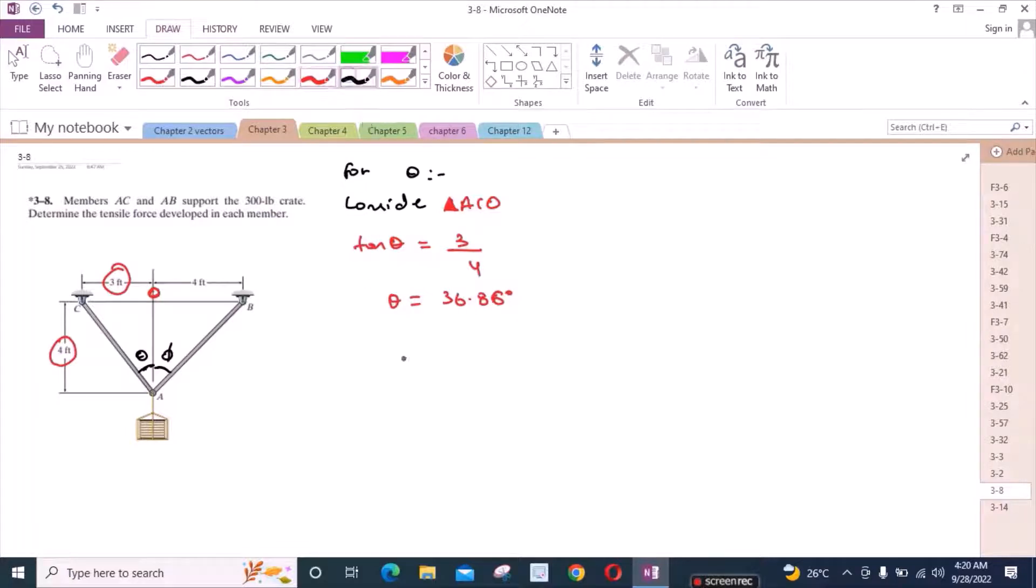Now for phi, consider triangle A, B, O. Again, tan phi is equal to 4 upon 4. So phi is equal to 45 degrees.